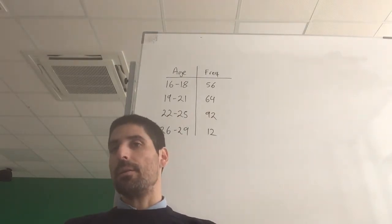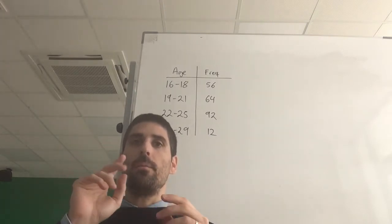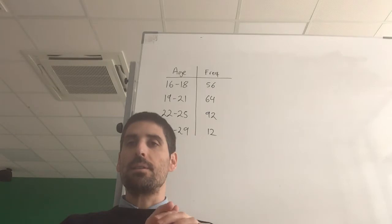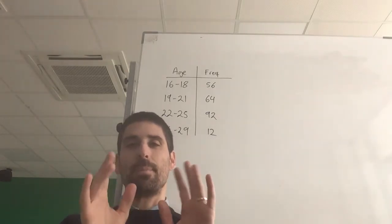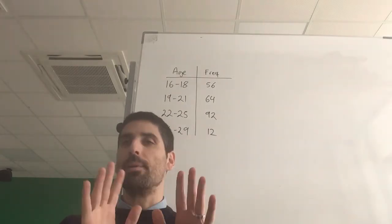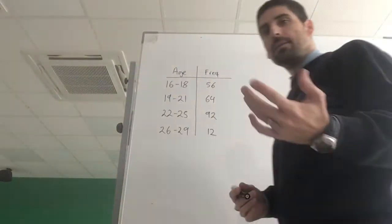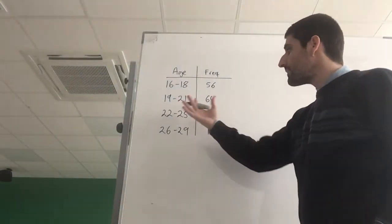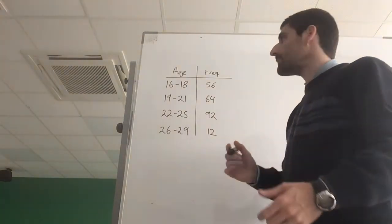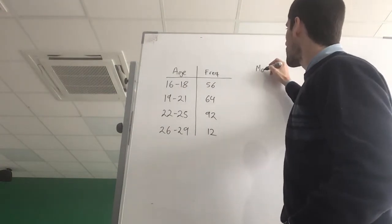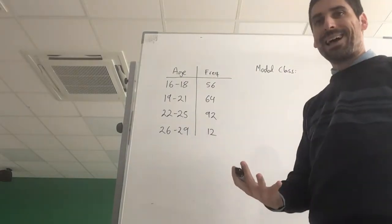I'm going to talk about the mode and the mean first, and I'll talk about the range and the median later. So let's go then. The mode: when we have a grouped data table we don't call it the mode anymore because we don't have the actual data, so we call it the modal class.